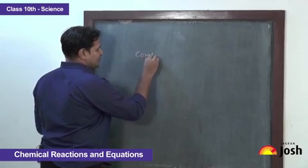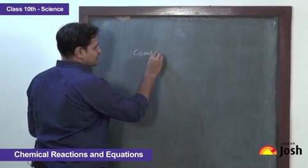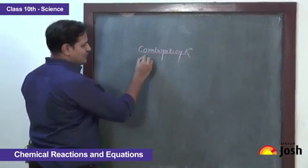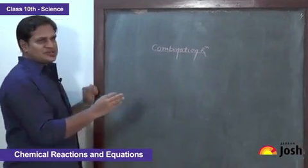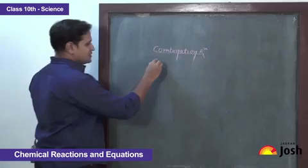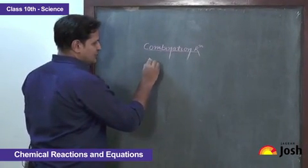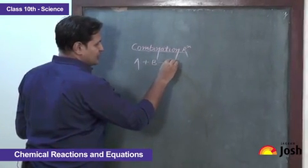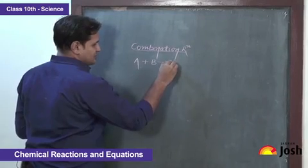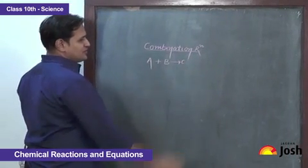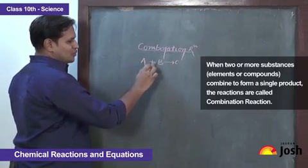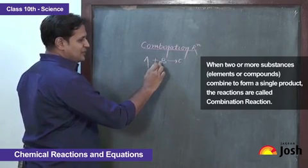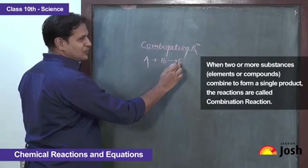The first type of chemical reaction is the combination reaction. A combination reaction may be defined as one in which two or more simple elements or compounds combine chemically to form a single compound as the product.